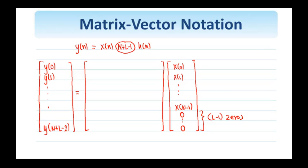So if we look at the structure of H here, this matrix, it will have h(0) on its main diagonal, h(1) on the diagonal below it, all the way to h(l-1).